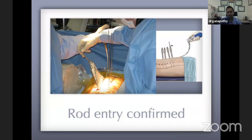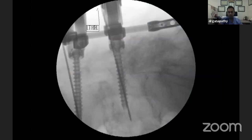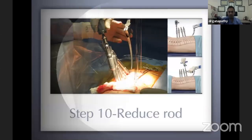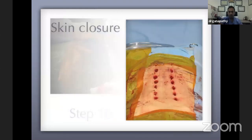Once all extenders are assembled, you've created a railroad, and you pass the rod through a separate stab incision above, pushing it through all levels. Make sure rod entry is confirmed radiologically. When doing long constructs with skipped levels — for example T12 and L1 — rod passage can be difficult. A practical tip: make a small stab incision between skipped levels to guide the rod as it passes to the distal segment. After passing the rod and confirming positioning, you close the skin.